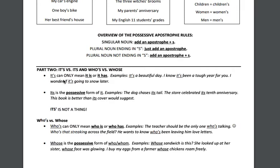It's with an apostrophe can only mean it is or it has. For example: it's a beautiful day — that's it is a beautiful day; I know it's been a tough year for you — it has been a tough year; I wonder if it's going to snow later — it is going to snow later. The form without an apostrophe, its, is the possessive form. The dog chases its tail — the tail that belongs to it. The store celebrated its 10th anniversary. Sometimes on the ACT, its' is given as an option — it is never, ever a thing.